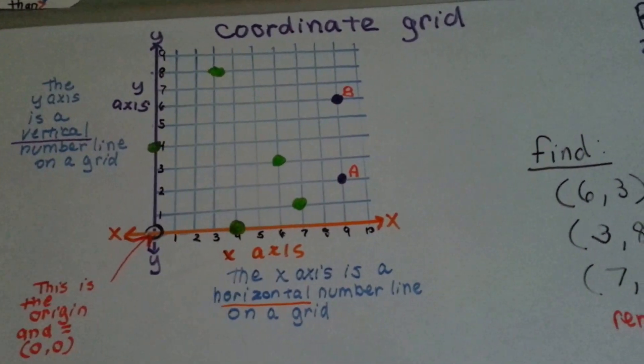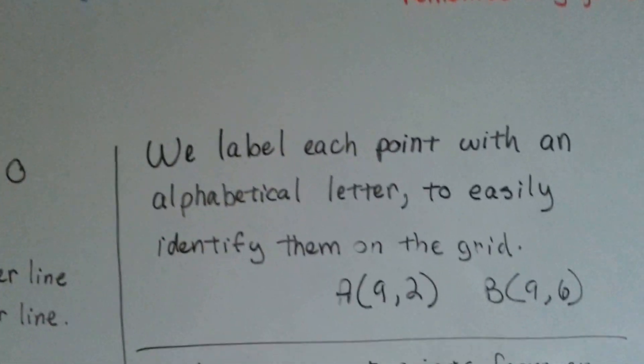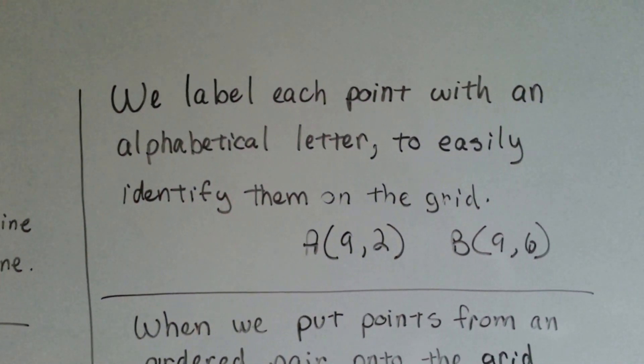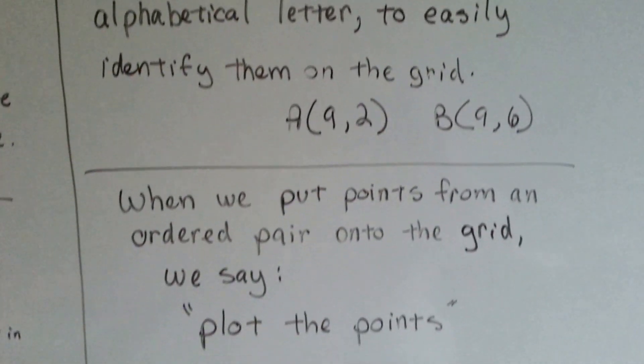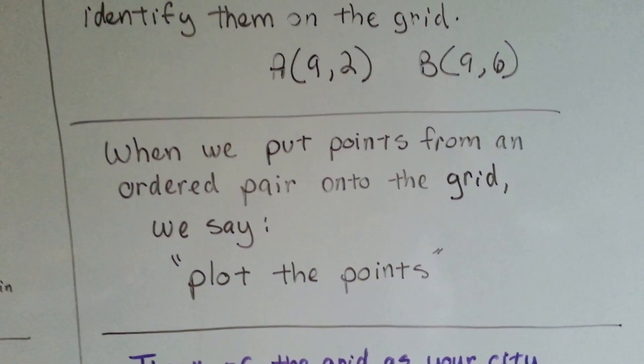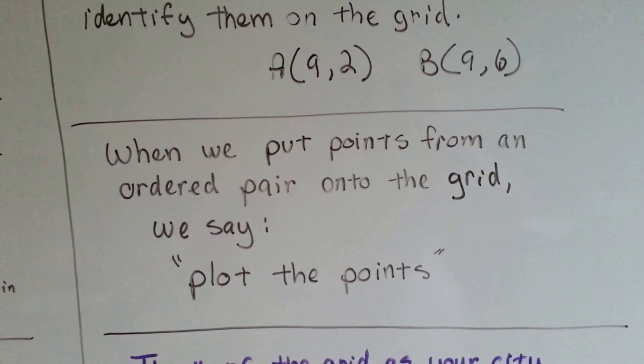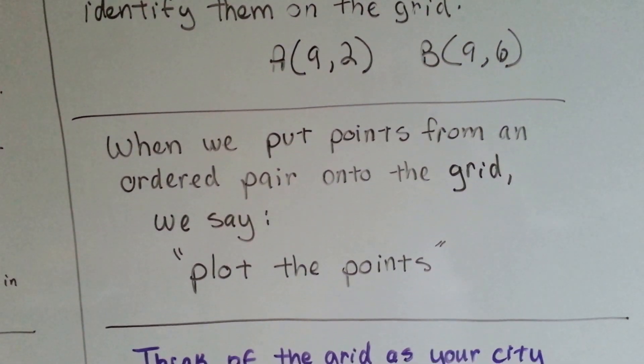Notice they have an a and a b on the points. We label each point with an alphabetical letter to easily identify them on the grid. a is 9, 2, and b is 9, 6. When we put points from an ordered pair onto the grid, we say we're plotting the points.